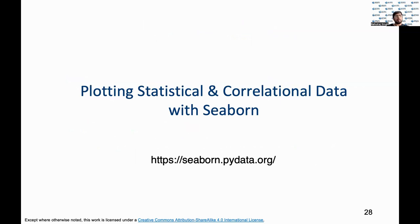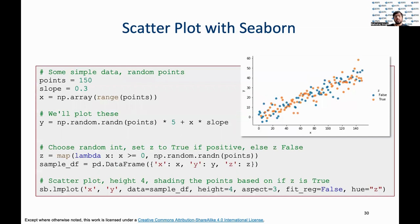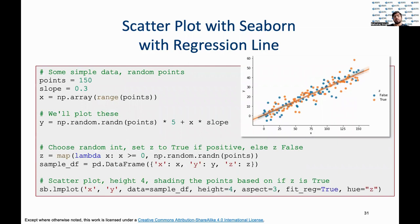Seaborn is an extension from Matplotlib with built-in themes for colors, univariate and bivariate distributions, linear regression analysis tools, and ways of visualizing matrices and time series data. Here in this code, we see a scatter plot using Seaborn generated from random numbers. We can see that Seaborn allows for some additional customizations like aspect ratio and hue. In the next plot, we also plot a regression line through the scatter points that determines the closest squared distances from each point, and this can be added using Seaborn with just one additional parameter.